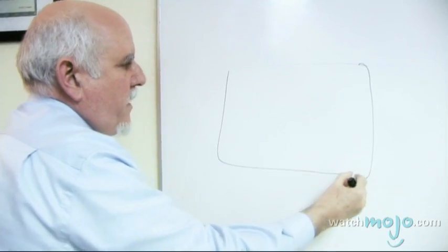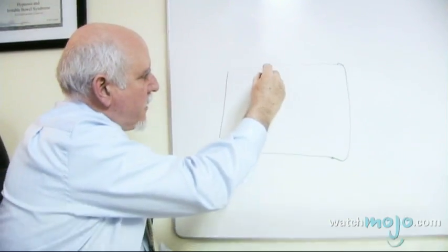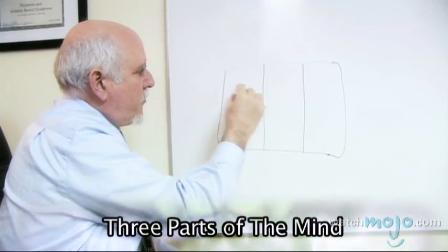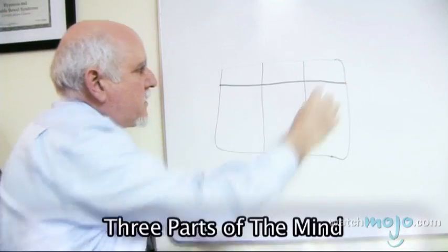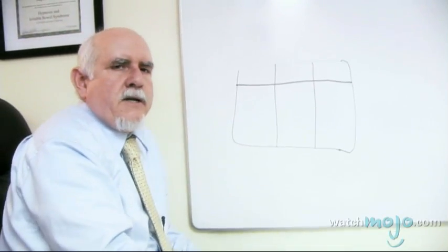Here's a model of the mind as the hypnotist sees it, and there's at least three parts of our mind. You've heard of them all before, but it's just how do we define them and how do they interrelate with each other.